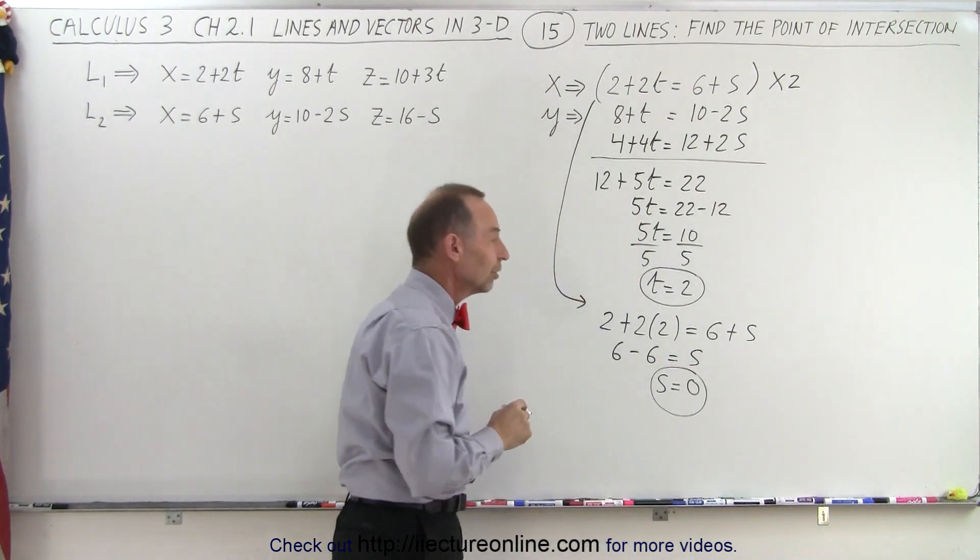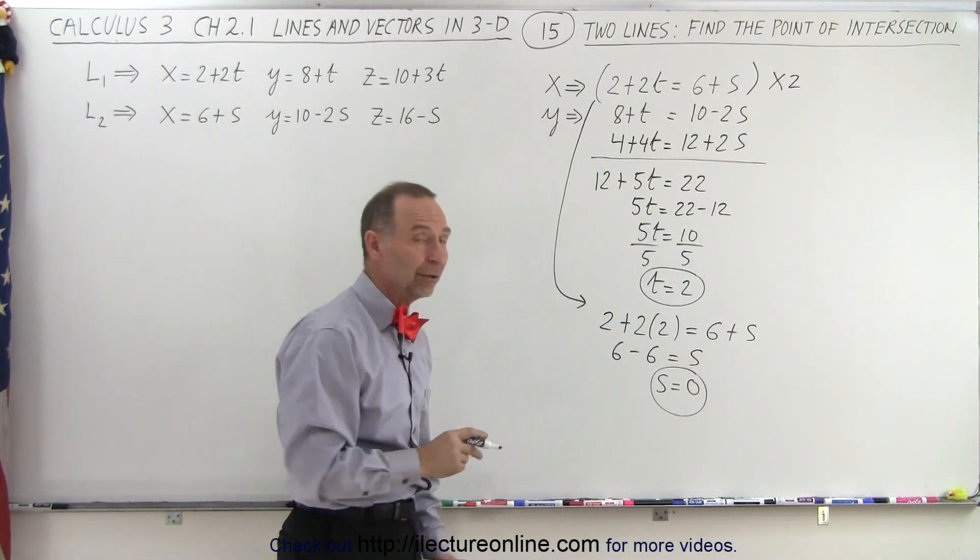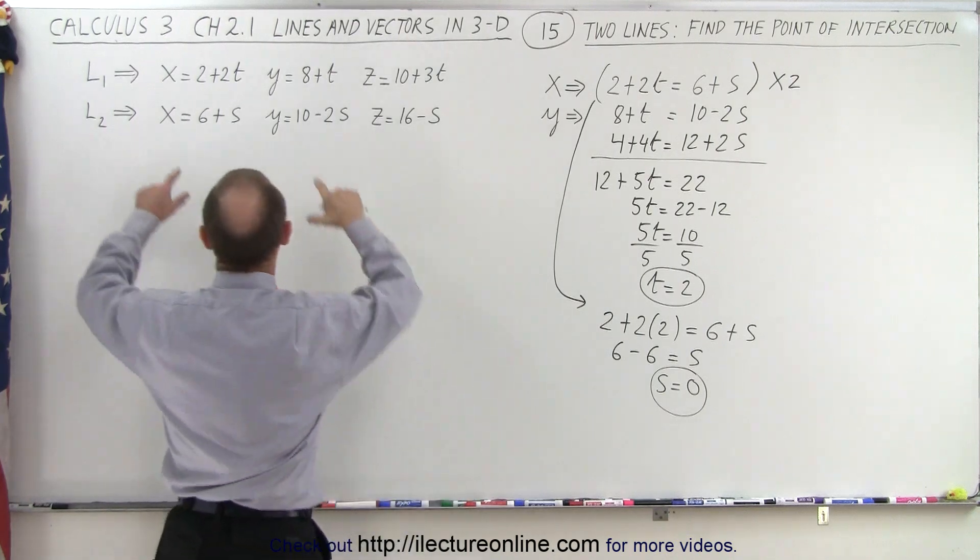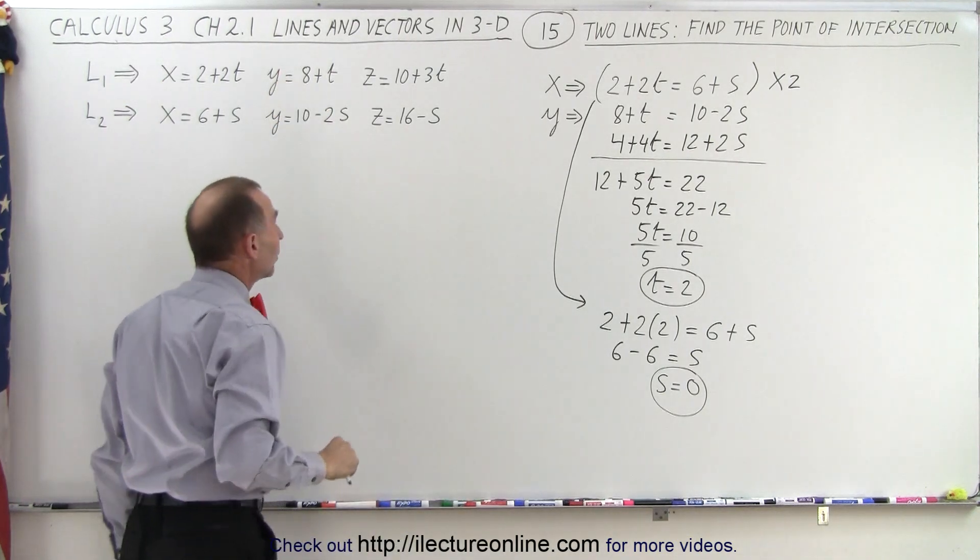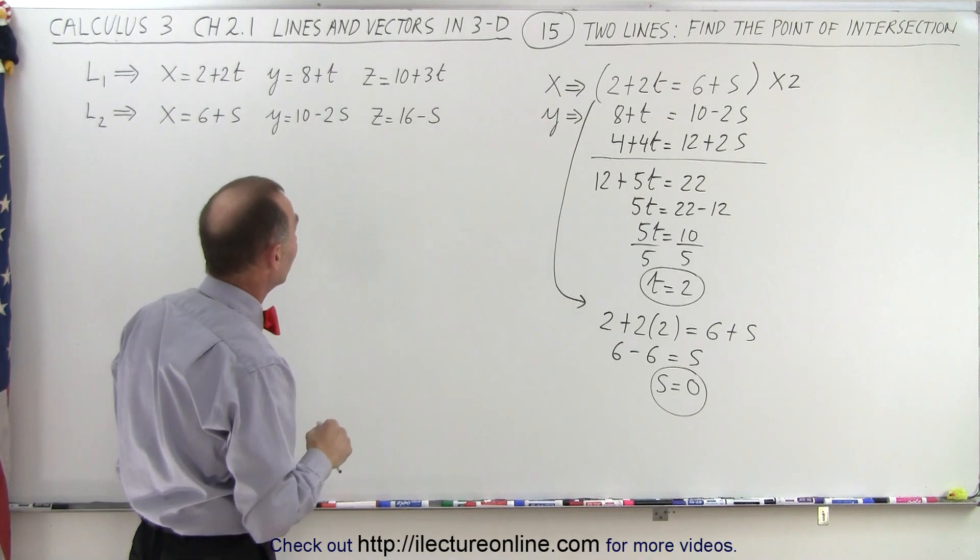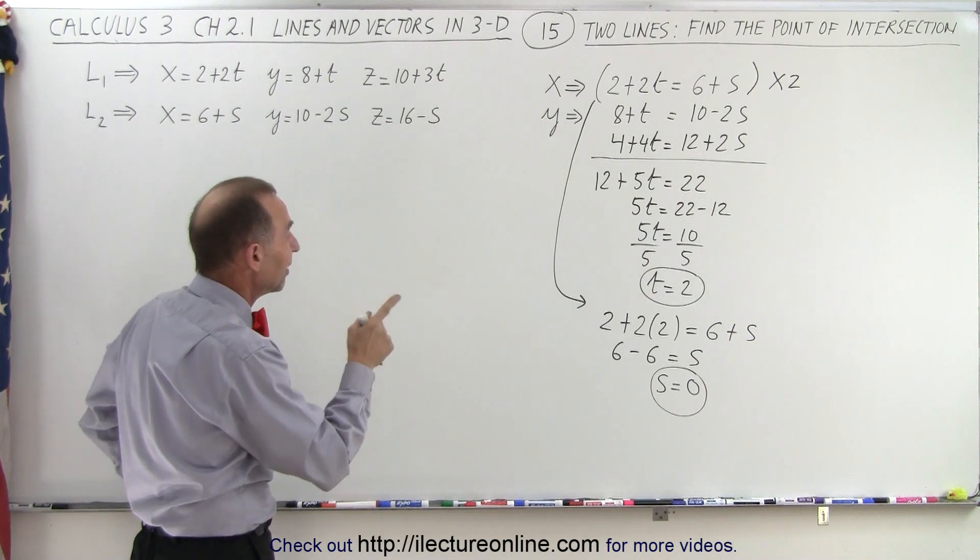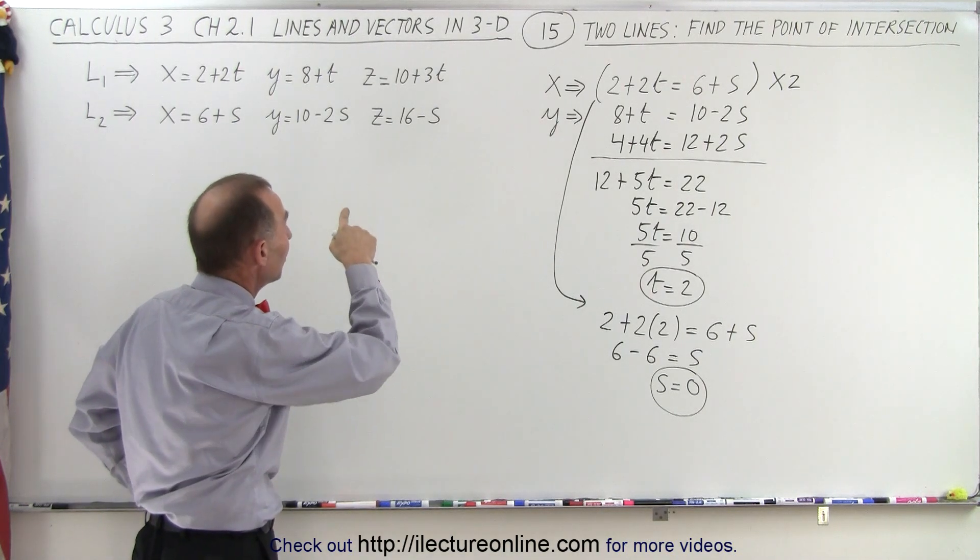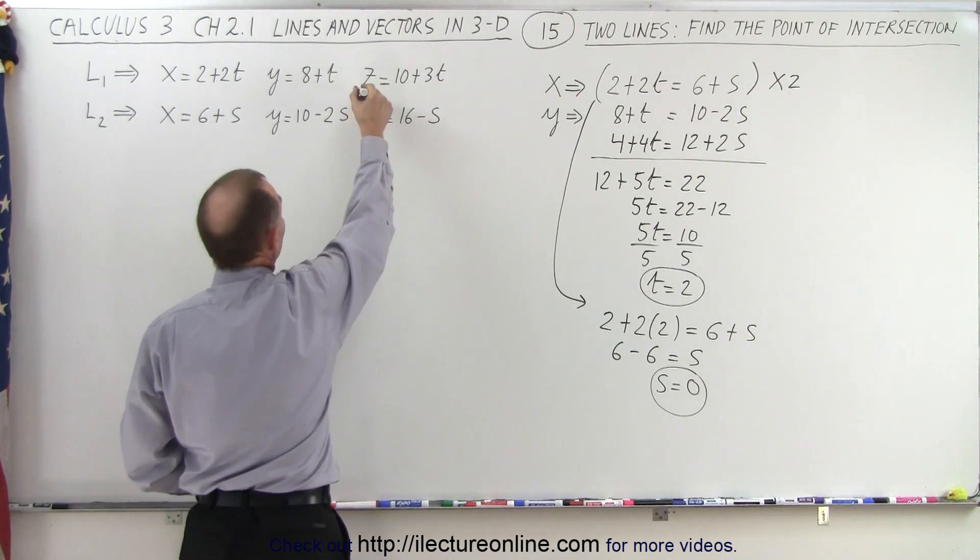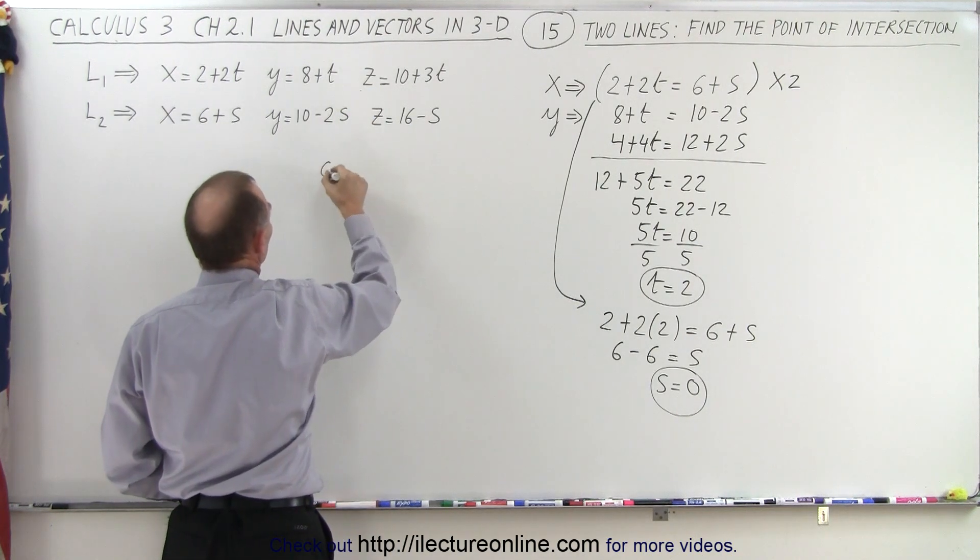So, if t is equal to 2 and s is equal to 0, that means both the x's and the y's will equal each other for the two equations, for the two lines, I should say. Alright, let's see if we plug those values in for z, for both of our equations, to see if that comes out, so we're going to do a check now.